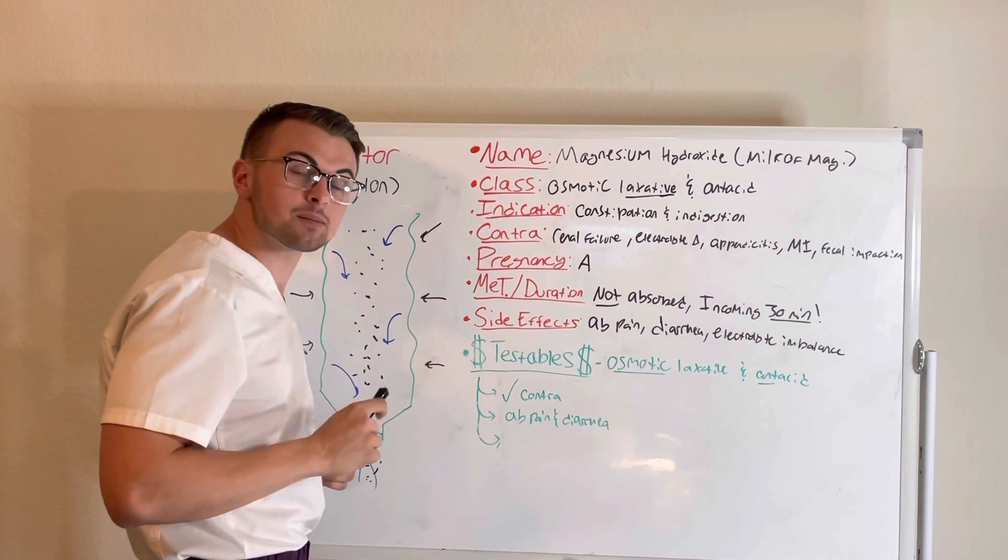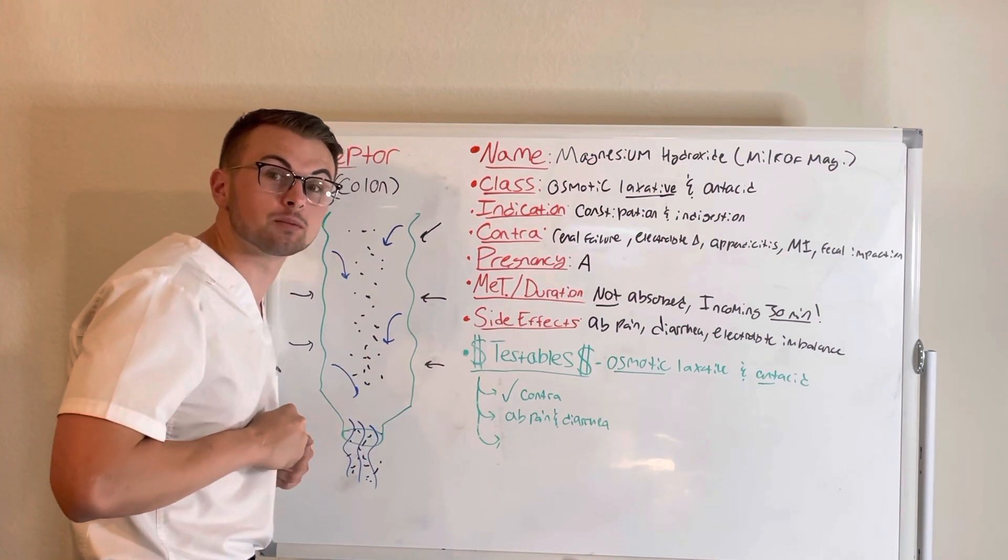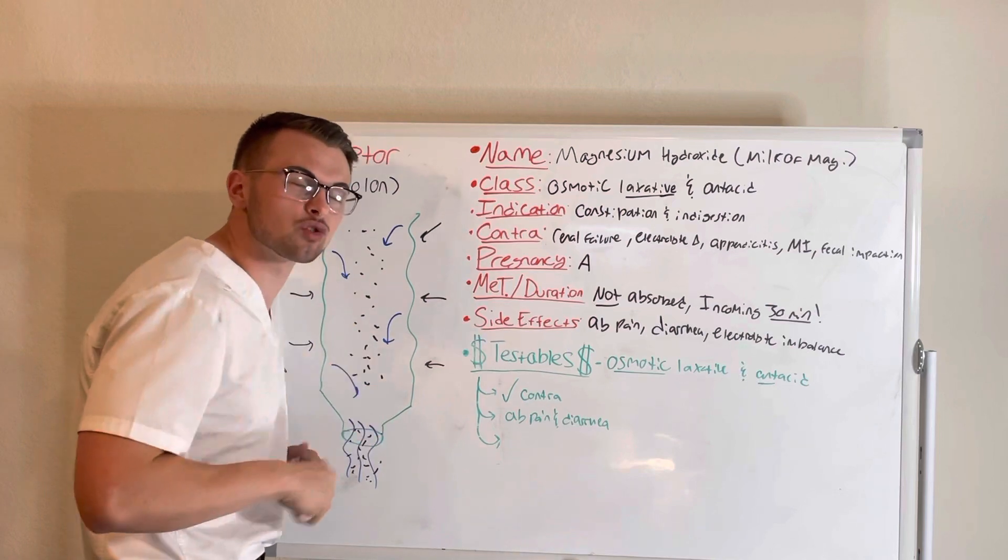Additionally, magnesium hydroxide also reacts with stomach acid to make magnesium chloride, which helps decrease acidity.